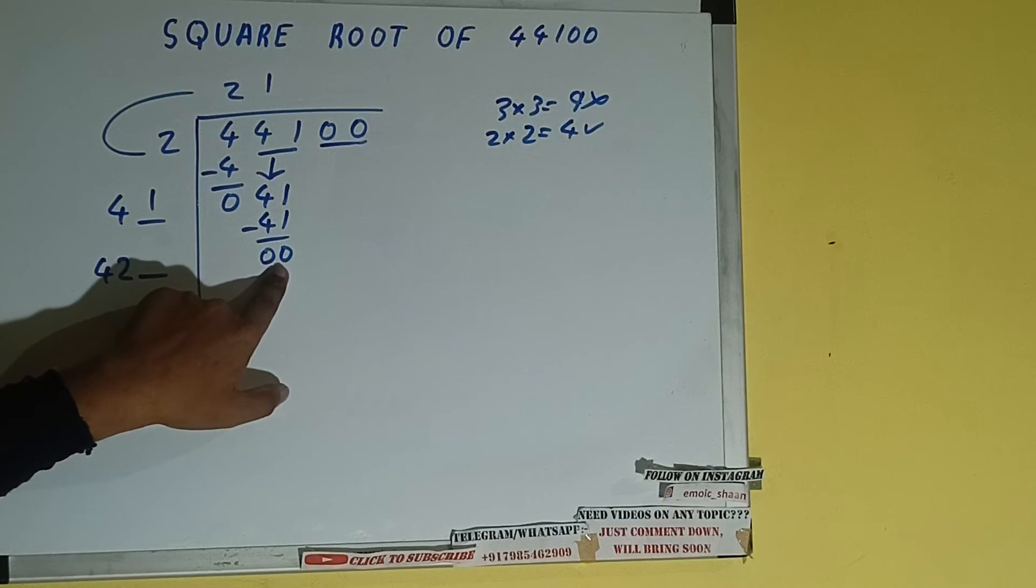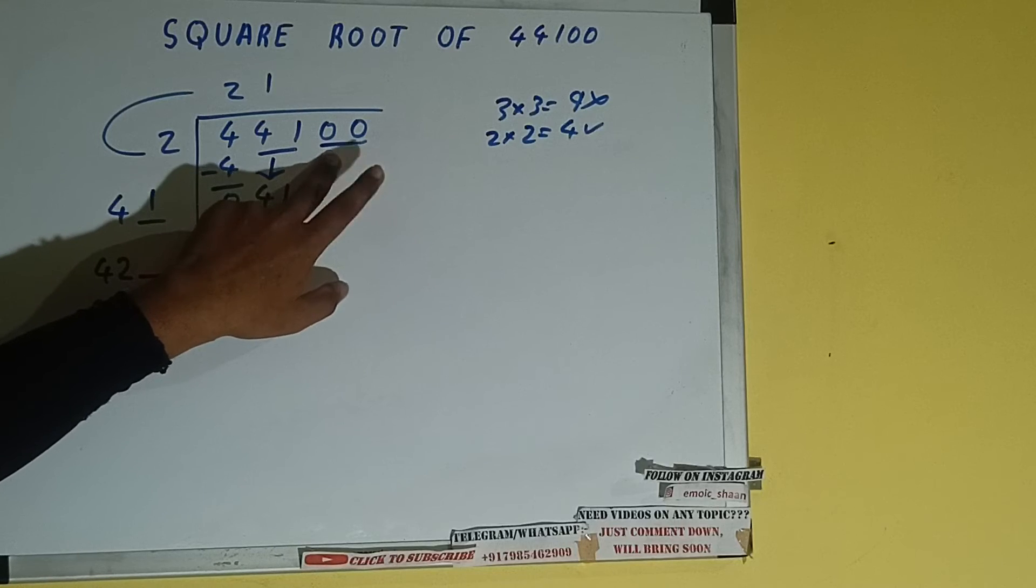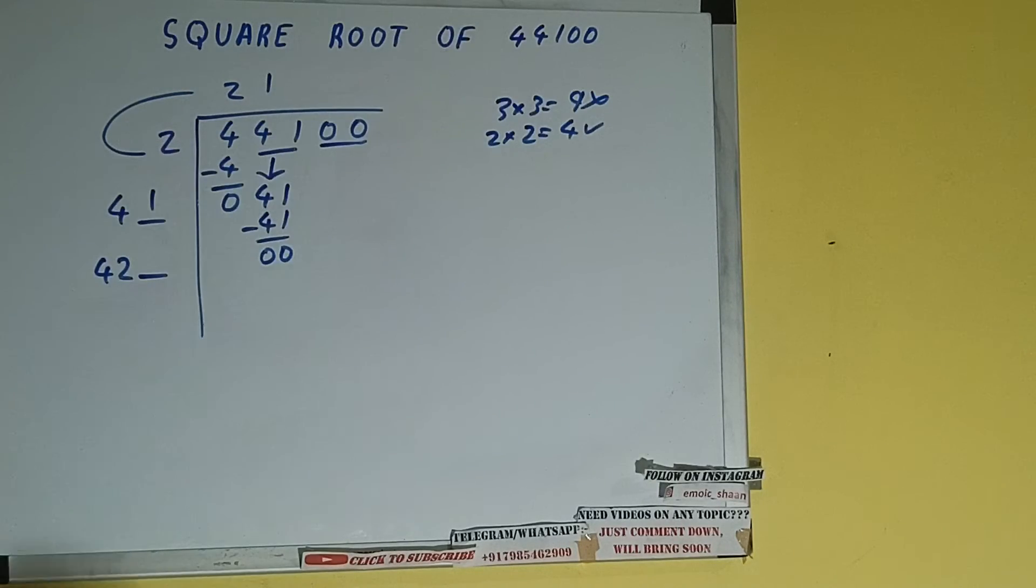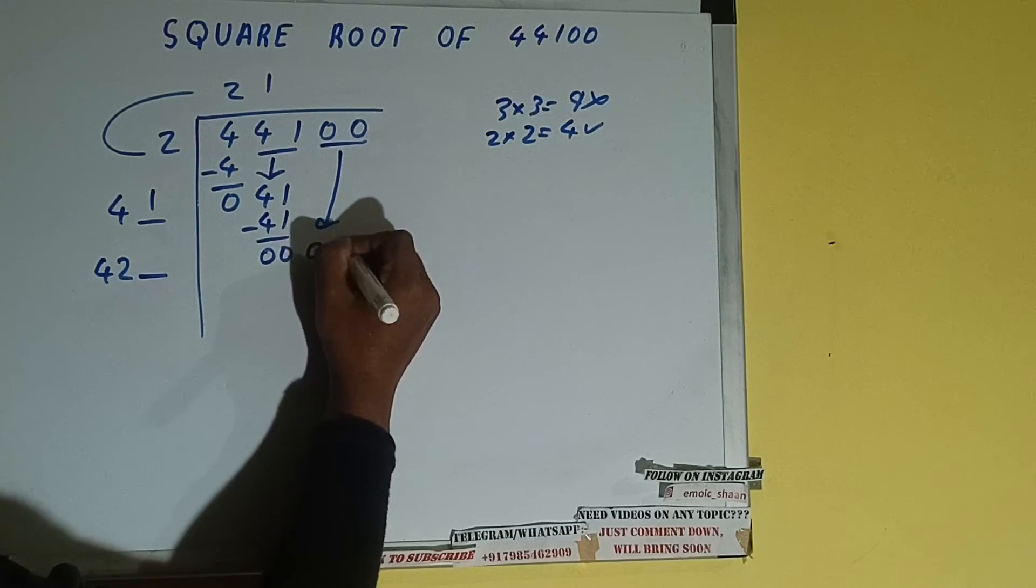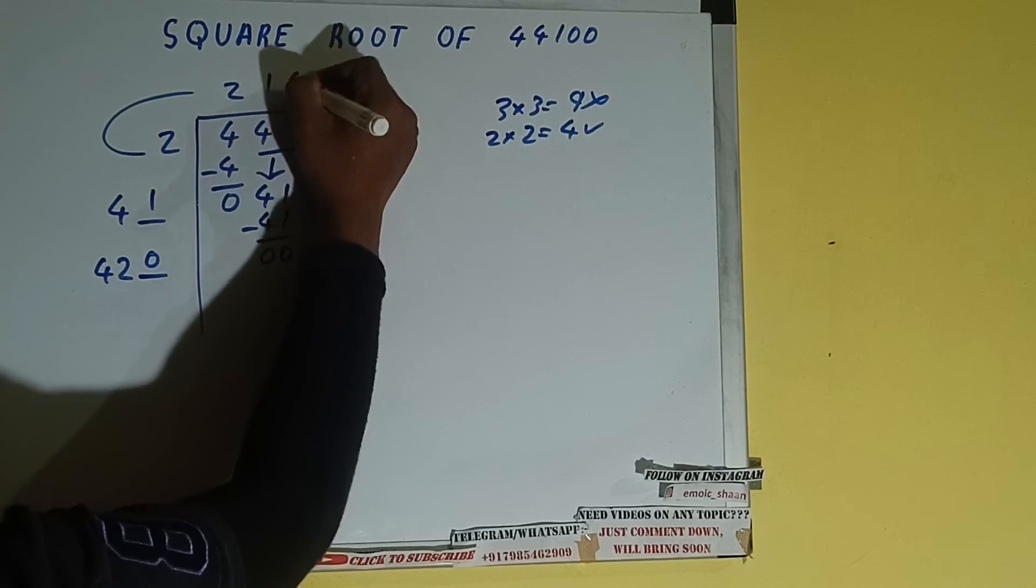Now here we have got 0, but if we see here we have a pair of 0 that was part of the number which is not divided. So because this pair of 0 is part of the number, we have to divide it once. So we'll divide it once. We'll bring it down and we'll write 0 here and 0 here.